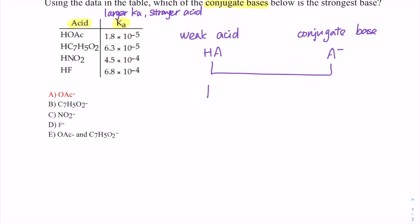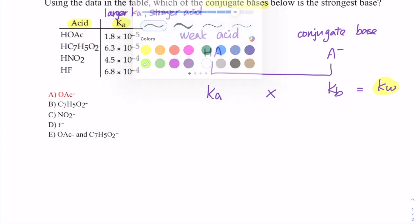We have discussed that Ka times Kb equals Kw. Kw is a constant for water autoionization. That's a constant. If you have two values, Ka and Kb, that multiply to equal a constant, what's their relationship? They are inversely related.